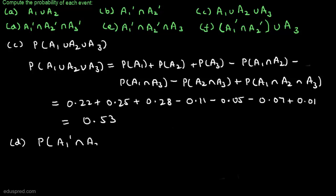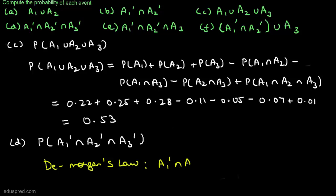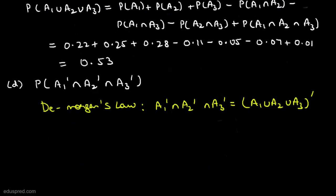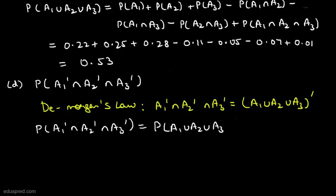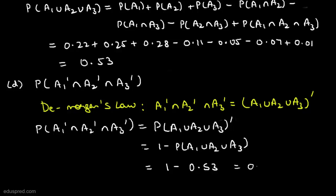In part D, we have to find the probability of the event A1 complement intersection A2 complement intersection A3 complement. This part is just an extension of part B. Using De Morgan's law, A1' ∩ A2' ∩ A3' = (A1 ∪ A2 ∪ A3)'. So P(A1' ∩ A2' ∩ A3') = 1 − P(A1 ∪ A2 ∪ A3). From part C, that probability is 0.53, so subtracting from 1 we get 0.47.